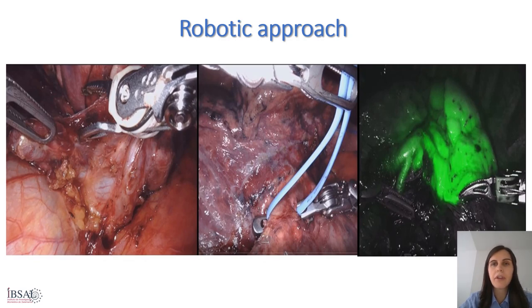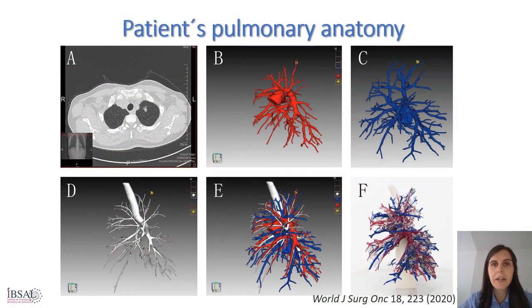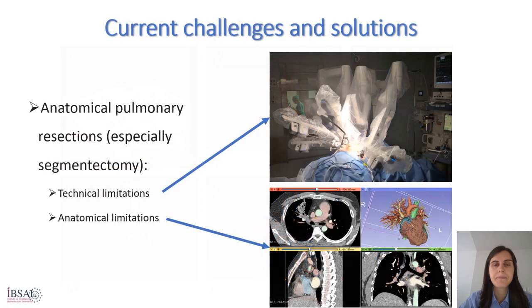Moreover, the use of near-infrared technology available on the DaVinci system makes the identification of segmental planes easier and more precise. Regarding patients' anatomy, 3D reconstruction imaging can provide physicians with a more detailed view of the relative position of pulmonary anatomical structures compared with traditional two-dimensional CT imaging. We hypothesize that both technologies — robotic surgery and 3D reconstruction — in combination could be beneficial for patients undergoing anatomical lung resections.